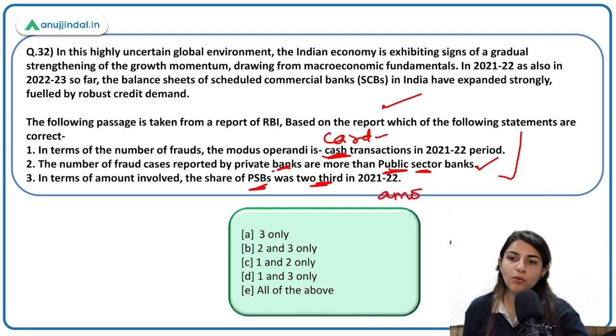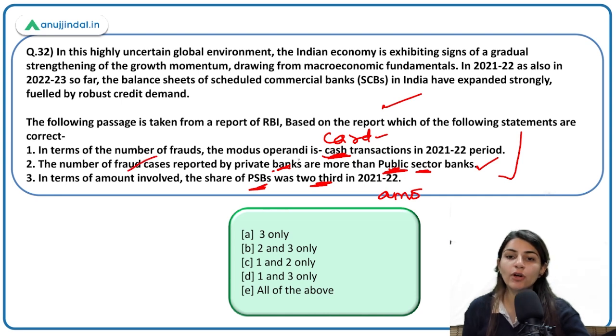Regarding fraud cases, when it comes to the number of fraud cases it was more in private banks. Both these statements are correct; the first one is incorrect.